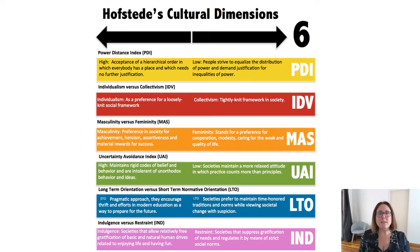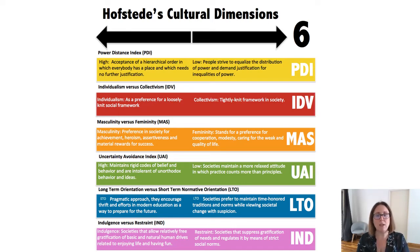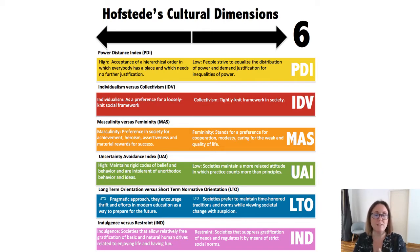In analyzing that data, what Hofstede found was that there seemed to be patterns of responses — averages in responses that were quite distinct in some national groups or countries compared to others. From that, he identified four major cultural dimensions, which are the first four dimensions on this list. The final two dimensions came later, once the research was broadly employed across a variety of other contexts and countries.